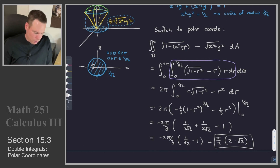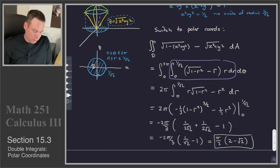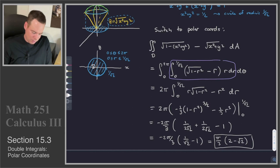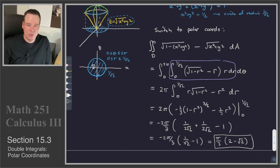The volume of the region — the amount of ice cream you get in your ice cream cone, where the cone is given by the expression in the question and the ice cream forms a sphere around the origin of radius 1 — is pi over 3 times (2 minus root 2). That's it for this section. Thanks for watching, and we'll see you again next time.